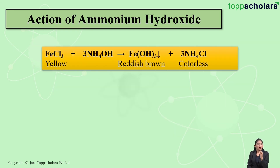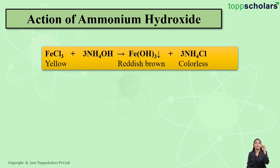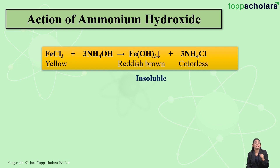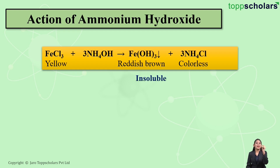Let us move on to ferric chloride. The color of ferric chloride solution is yellow. If I add drops of ammonium hydroxide to this yellow colored solution, it results in the precipitation of ferric hydroxide, which is reddish brown in color, along with ammonium chloride which is colorless. This precipitate of ferric hydroxide is insoluble in excess ammonium hydroxide. So if you get a reddish brown precipitate that is insoluble in excess ammonium hydroxide, the metal ion present in the salt is Fe³⁺.